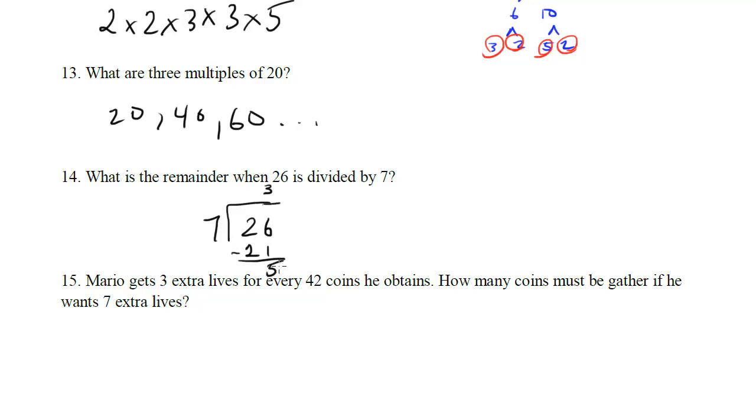We subtract, 5 comes out. Notice 7 can't go into 5, so our remainder is going to be this 5 left over. So the answer to 14 is 5.